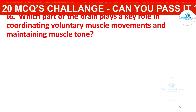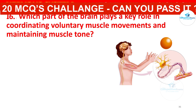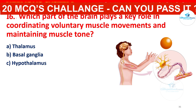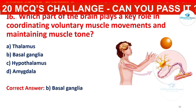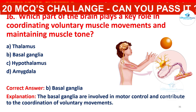Which part of the brain plays a key role in coordinating voluntary muscle movements and maintaining muscle tone? Your options are: thalamus, basal ganglia, hypothalamus, or amygdala. The correct answer is basal ganglia. The basal ganglia are involved in motor control and contribute to the coordination of voluntary movements.